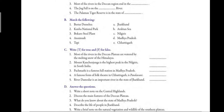The last question: write a brief note on the natural vegetation and wildlife of the southern plateau. The forests of the southern plateau have a wide variety of flora and fauna — both plants and animals are found here in large quantities. Animals such as Nilgai, black buck, leopard, boar, sambar, elephant, and spotted deer are the main animals found in these forests.